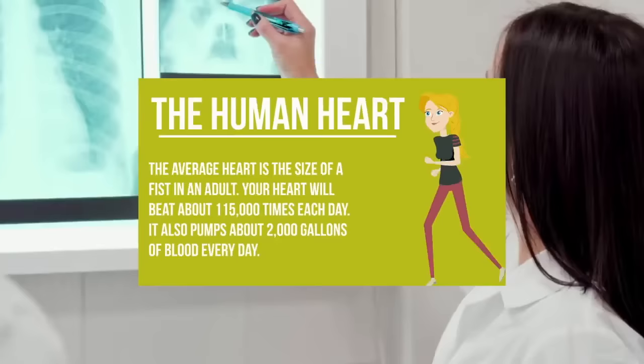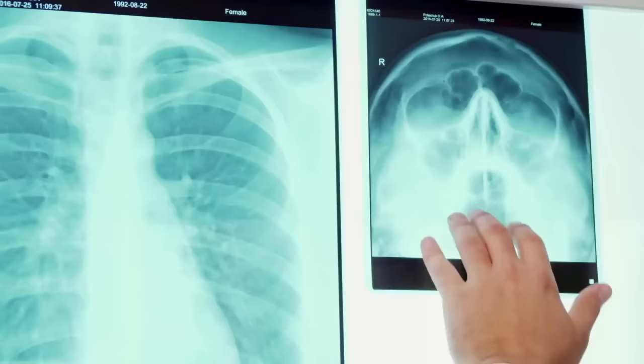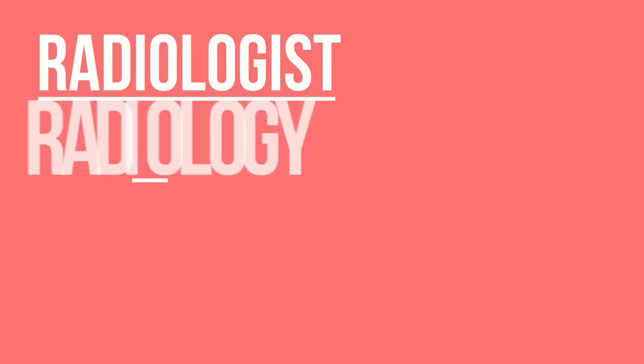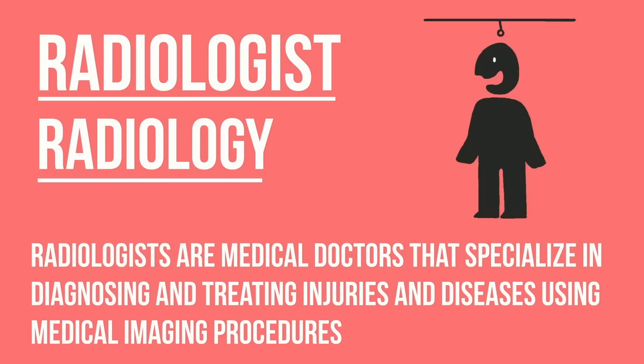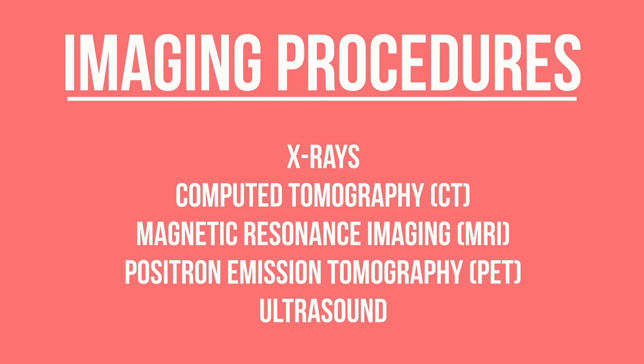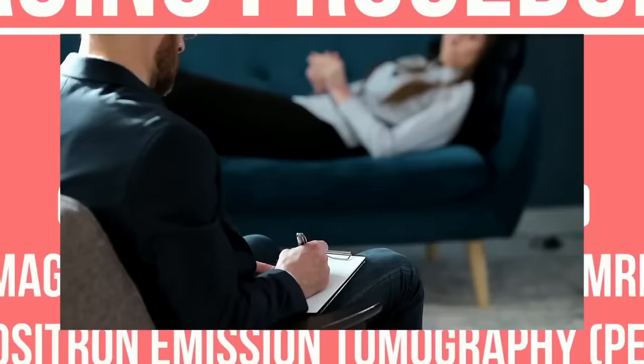Our next type of doctor is a radiologist. A radiologist works in the area of radiology. They are medical doctors that specialise in diagnosing and treating injuries and diseases using medical imaging procedures. Types of imaging procedures include x-rays, computed tomography (CT scan), magnetic resonance imaging (MRI), positron emission tomography (PET), and ultrasound.